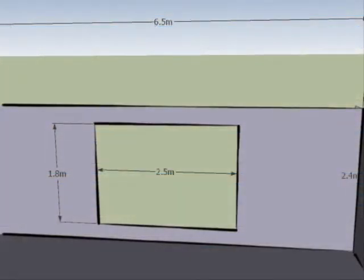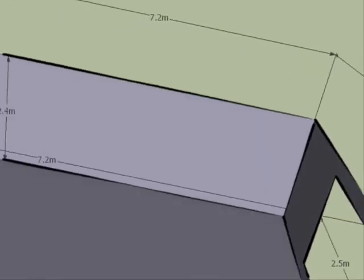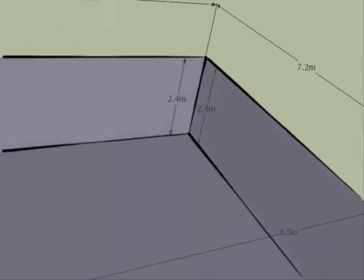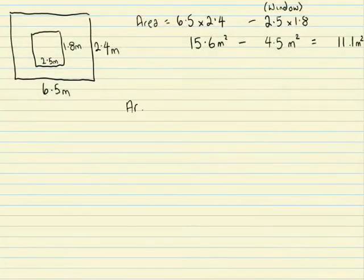So the next thing we would do is have a look at the next wall, looking directly over the opposite wall. This wall also is going to be 6.5 meters by 2.4 meters, so the area of this wall is going to be again 6.5 meters times 2.4 meters. The answer giving us 15.6 meters squared.